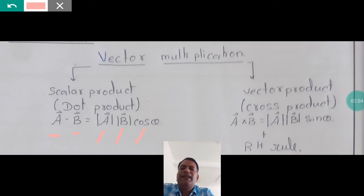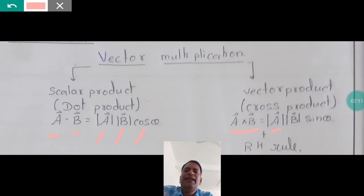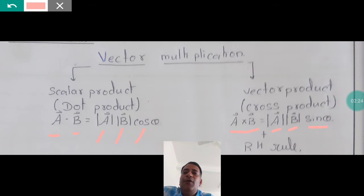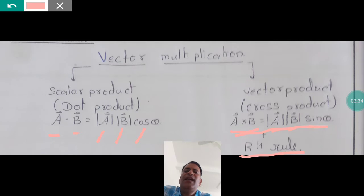Similarly, the cross product is written as vector A cross vector B, and it equals the magnitude of vector A multiplied by the magnitude of vector B multiplied by sin theta, where theta is again the angle between vector A and vector B. Along with A cross B equals AB sin theta, to find the direction we also use the right-hand rule, which I will teach when covering the vector product.